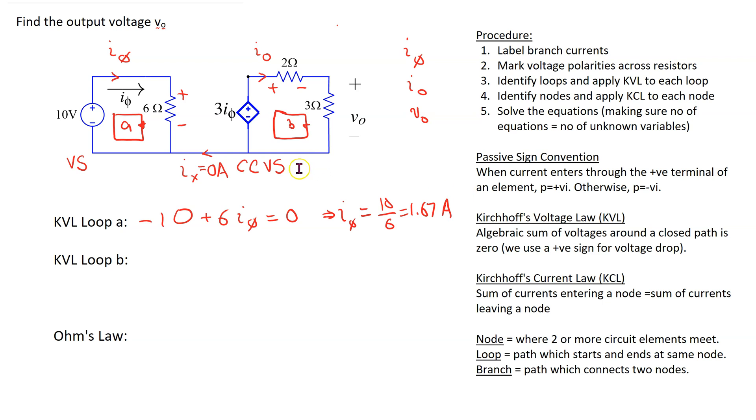Next, let's apply Kirchhoff's voltage law to loop B. We can start at the dependent source. Going from minus to plus is a voltage rise, so we get minus 3I5. Going from plus to minus is a voltage drop, so we get 2I0, and 3I0 equals zero. Substituting the value of I5 in this equation, we can show that I0 will come out to 1 amp.